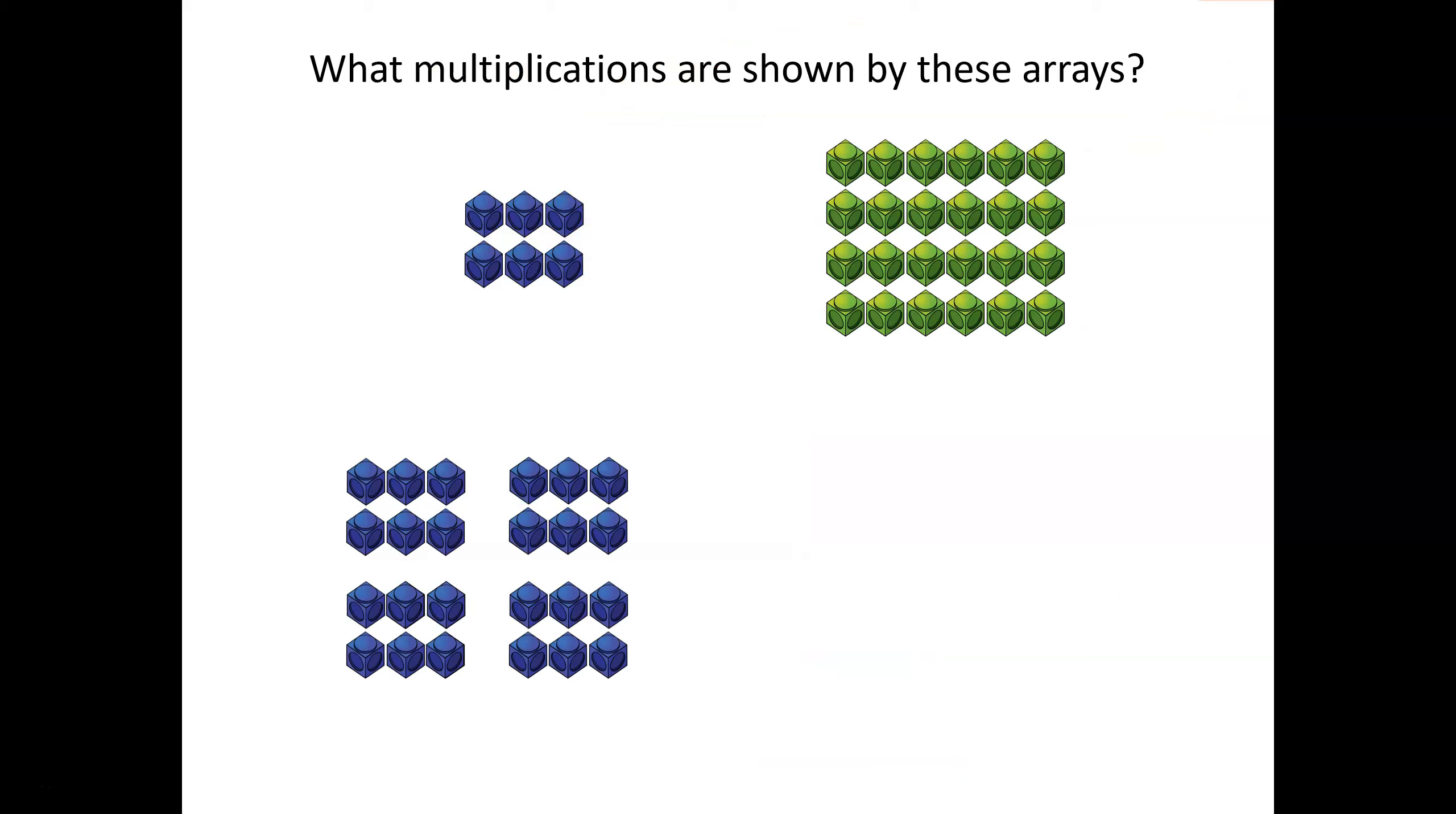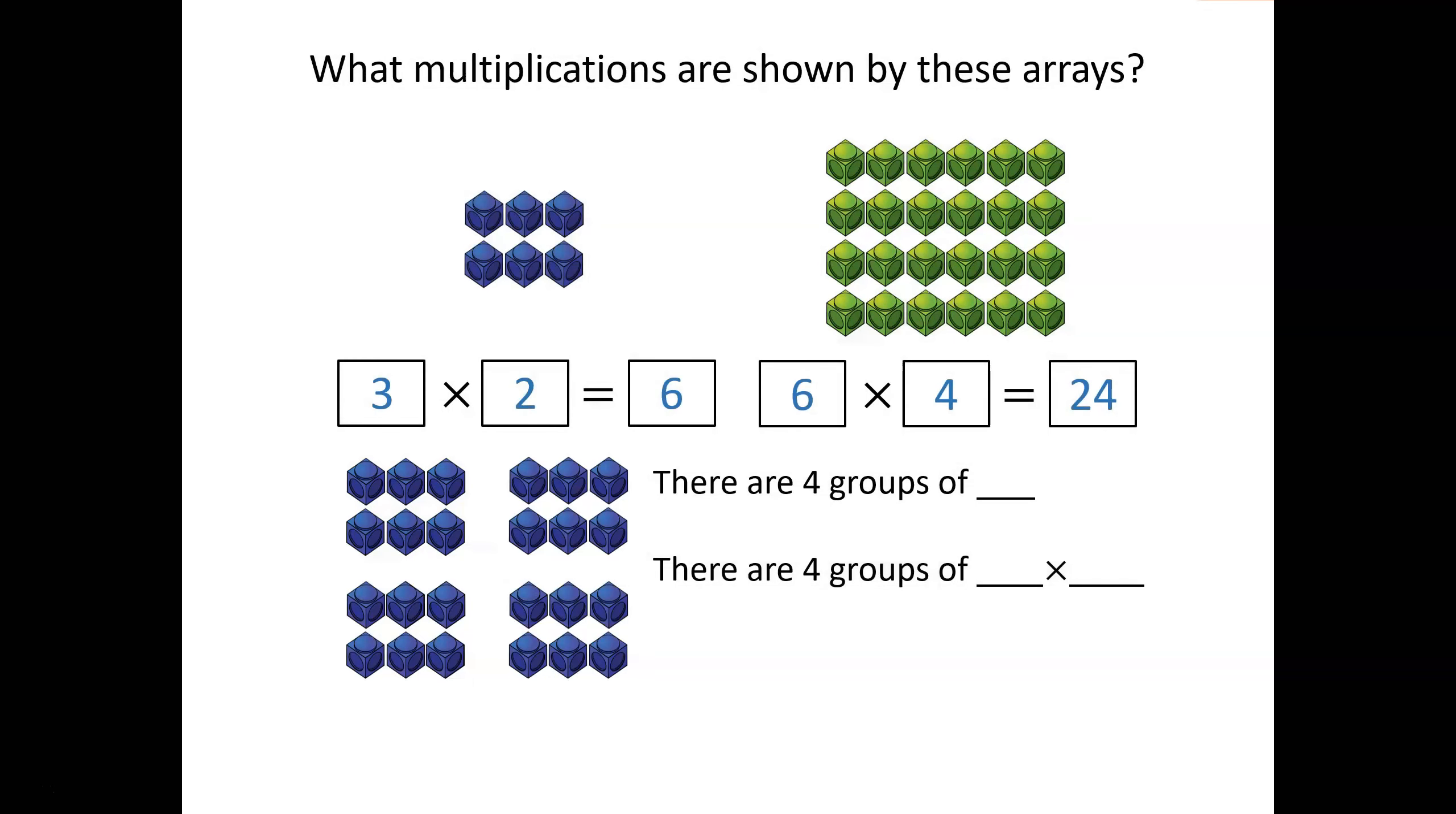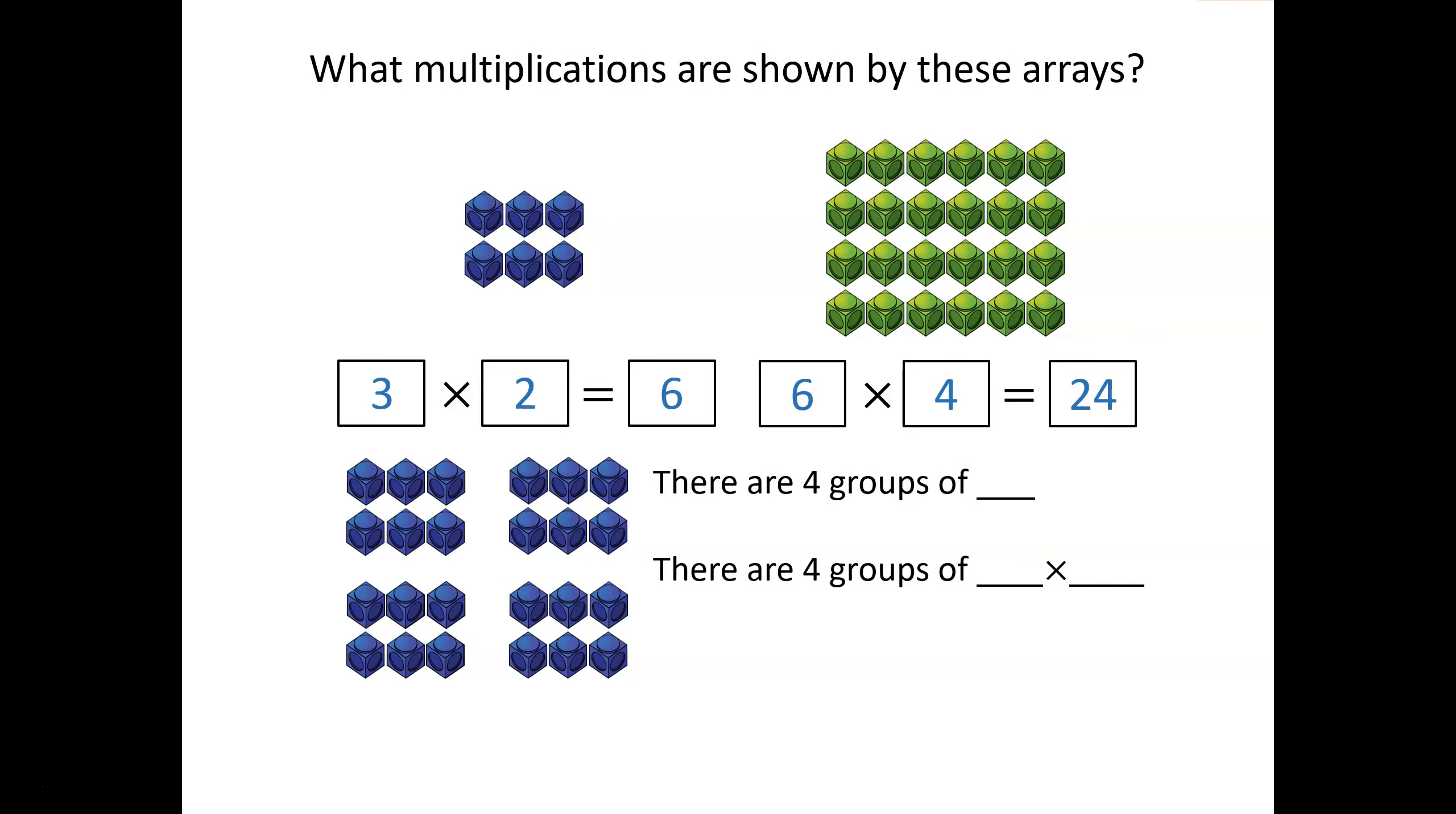What multiplications are shown by these arrays? Pause the video and have a think. The first array has three blue cubes multiplied by two, which is equal to six blue cubes. The second array has six cubes multiplied by four, which is equal to 24 cubes. Have a look at these arrays and the sentences. Can you fill in the missing numbers? There are four groups of six. So there are four groups of three multiplied by two. Look at the link between this group and our earlier array.